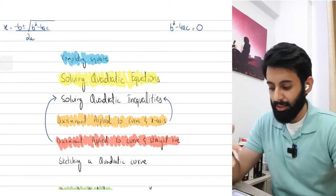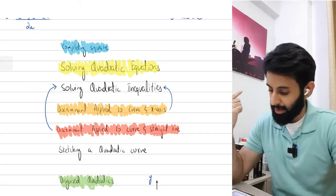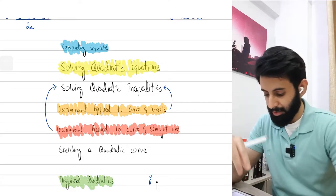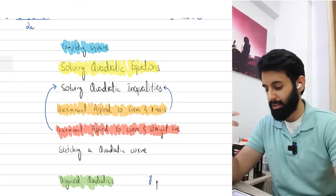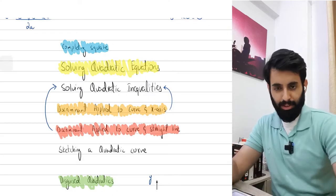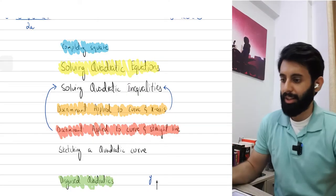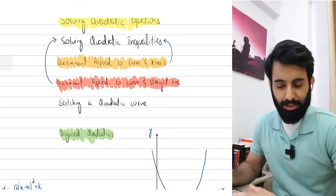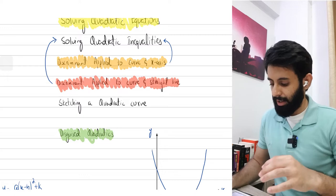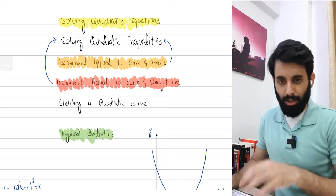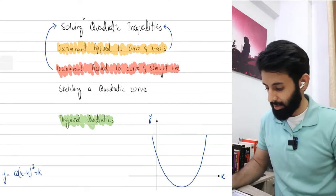Here are the key concepts you will be tested on: completing the square, solving quadratic equations, and solving quadratic inequalities. I haven't highlighted quadratic inequalities because it's not tested independently - it comes after discriminant, either applied to the curve and x-axis or to the curve and a straight line. Sketching a quadratic curve I haven't highlighted either, because that usually comes with functions.